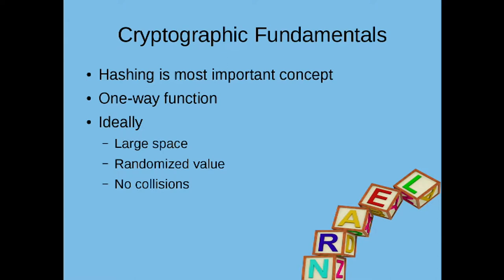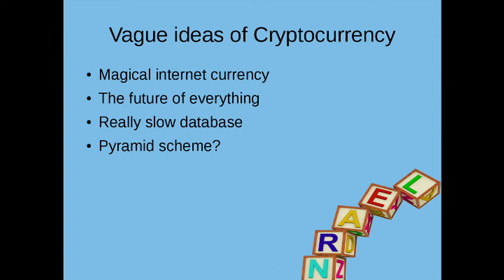We have certain properties of hashes that we really care about. Ideally, we want them to be fairly randomized so that you can't predict them. We also want hashes to have no collisions, so two inputs don't ever have the same output, and we'd like a large amount of space for our hashes. Generally, you might think of a cryptocurrency as magical internet currency, or maybe a pyramid scheme, or you might be super hype on it. Really, it's kind of a slow database with a lot of different applications.